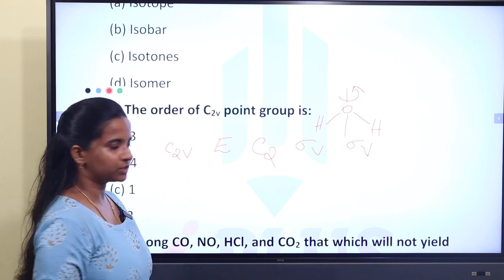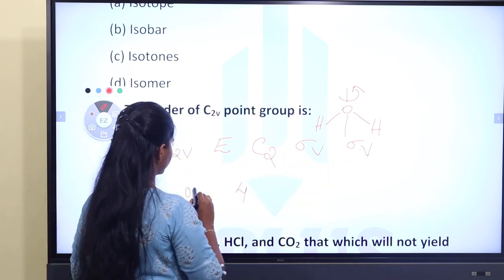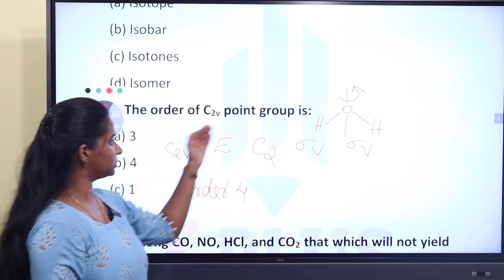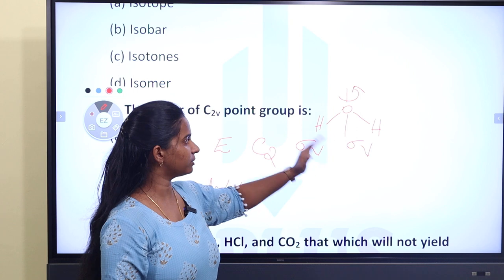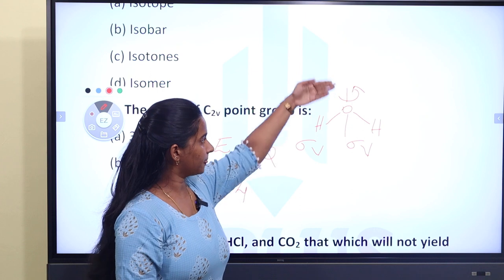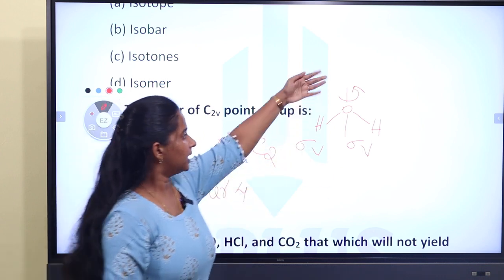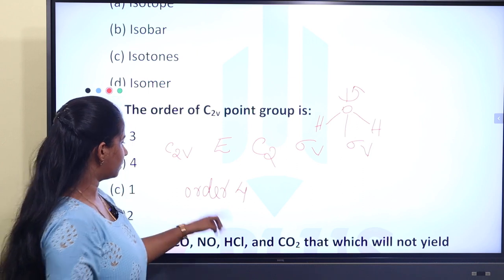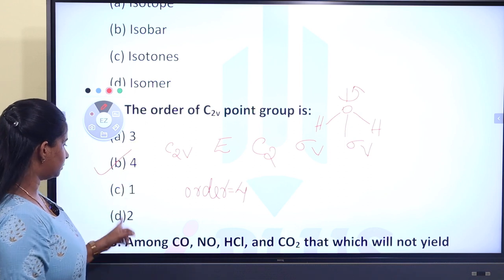How many symmetry operations are there? One, two, three, four — four operations total. So the order of C2V is four. For water (C2V): the identity element, C2 axis, sigma-v, and sigma-v' — that gives four symmetry elements. The answer is four.